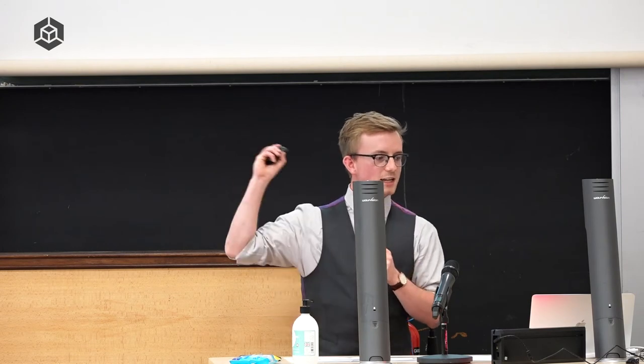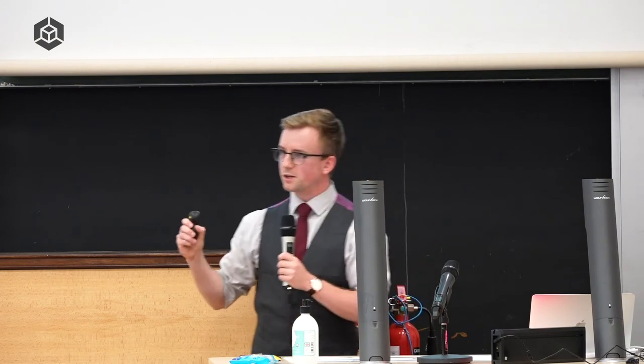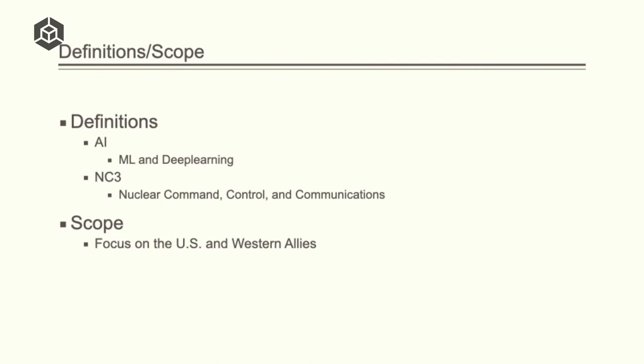So quick couple definitions. As I said, machine learning and deep learning are primarily what I'm talking about when I say AI, because that's really what's allowed these advances in detection and automation that we'll see in the near future. NC3, again, Nuclear Command Control and Communications is, in short, the whole apparatus we use to control weapons of mass destruction, prevent their use, plan for their use. This includes both human components and machine components.